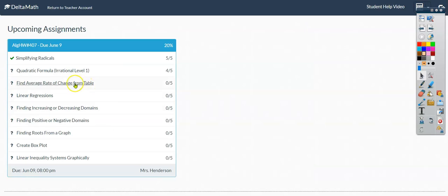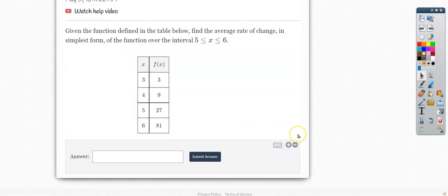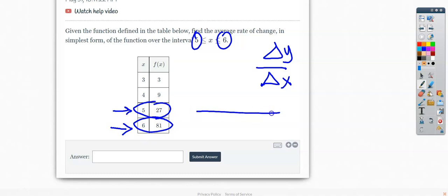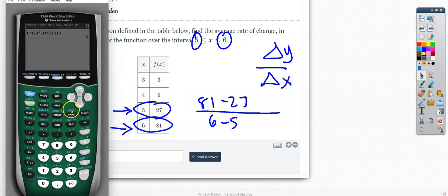Let's take a look at finding average rate of change from a table. The average rate of change is delta y divided by delta x, the change in y over the change in x. They need to tell you between which two values you're going to look. So go to your table and find x is 5 and x is 6. These are the two values you're going to use. So the change in y is 81 minus 27, and the change in x is 6 minus 5.